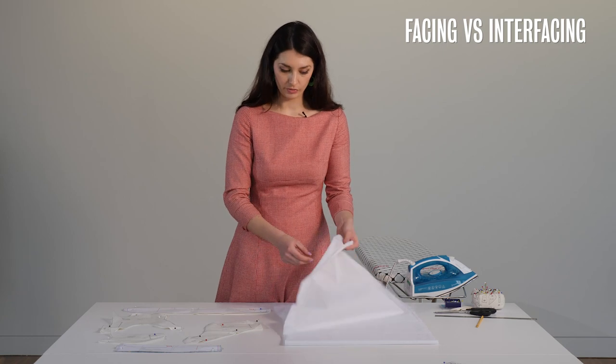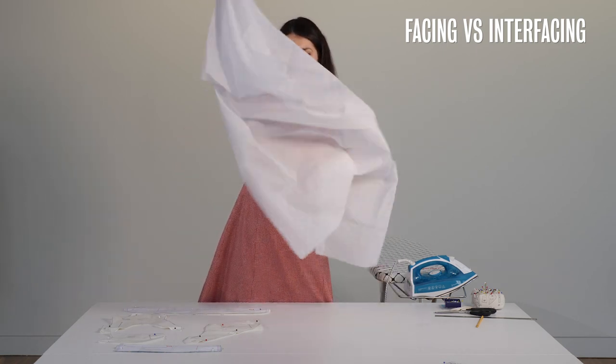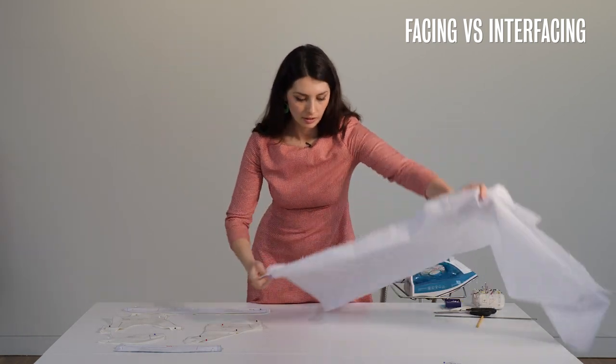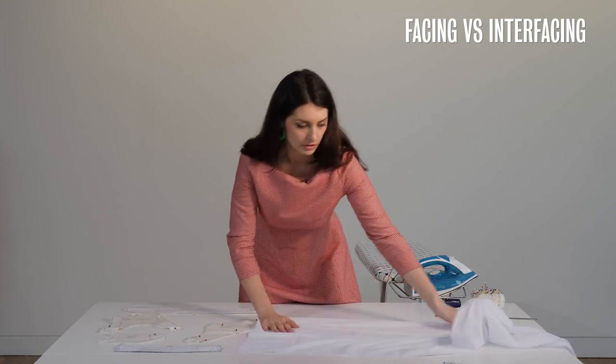So to cut out the interfacing is exactly the same as cutting out my pieces in the main fabric so I've folded it together wrong sides together and then I just want to lay my pieces on the interfacing.